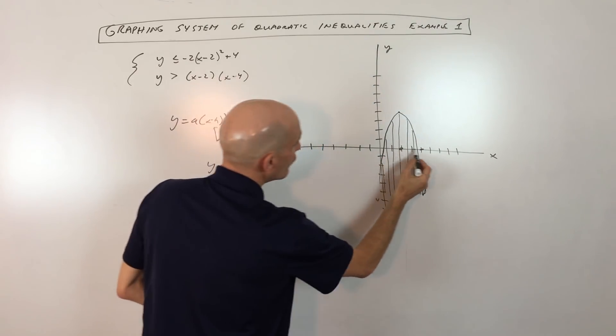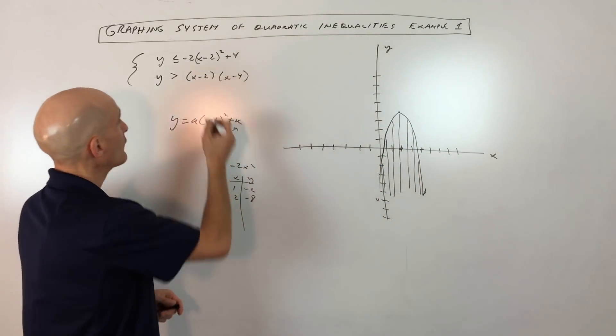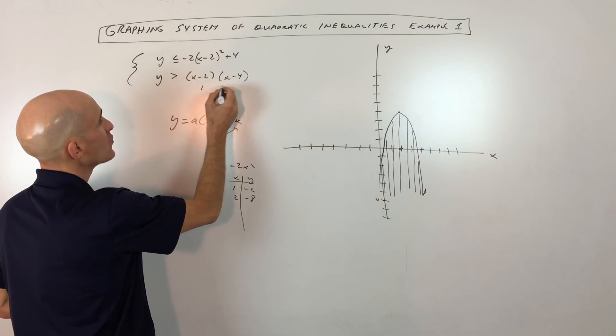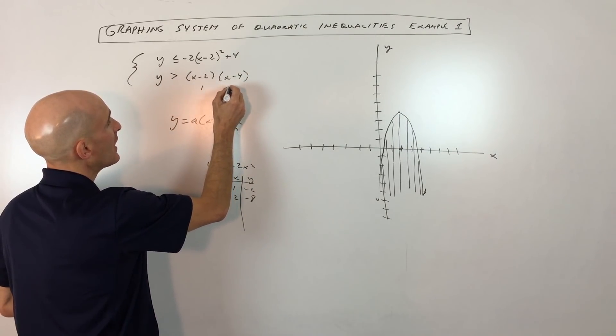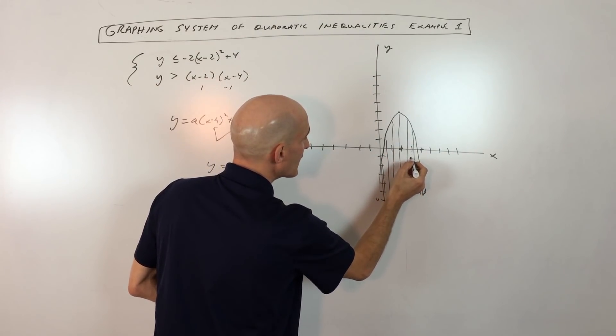And if you find the halfway point between two and four, that's three, that's gonna be the axis of symmetry of the parabola. And if we put three in here, you get 3 - 2 is 1. 3 - 4 here is -1. 1 × -1 is -1. So on that axis of symmetry, we're down here at -1.